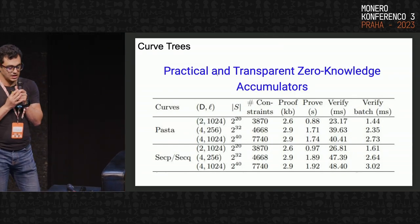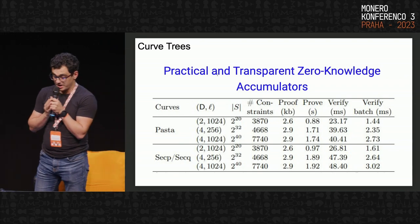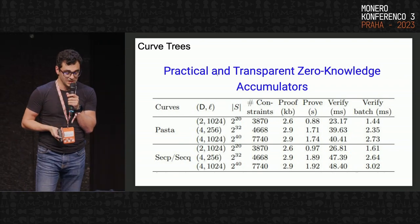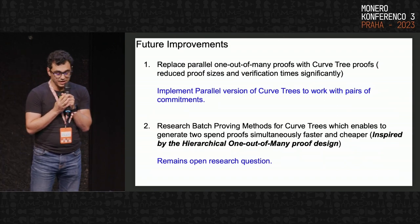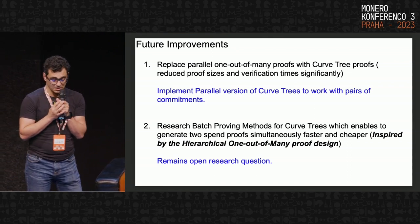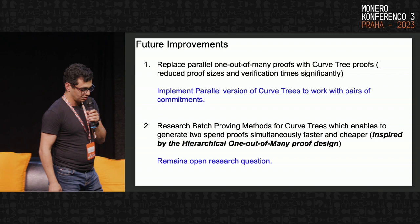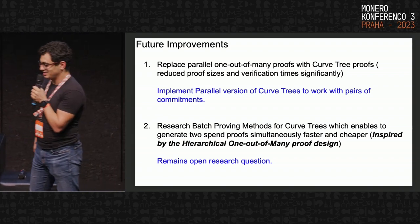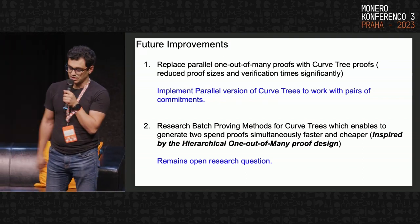Curve trees are very efficient, and we hope they can be used as a replacement for one-out-of-many proofs, as long as we can implement a parallel version of curve trees that works with pairs of commitments — or figure out how to engineer the structure of our coins to work with regular curve trees.